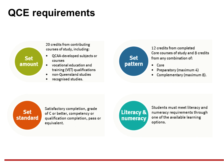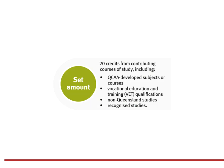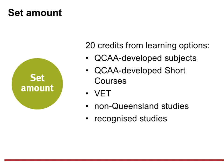If you have the QCE requirements brochure, this is the graphic I'll refer to. The set amount of learning is 20 credits to the QCE. These credits can accrue from a wide range of learning options, including QCAA-developed subjects such as general — including extension — applied, short courses, VET qualifications and recognised studies. Typically, one QCE credit is equal to one unit of learning in a course of study. Credits accrue when the set standard is met.